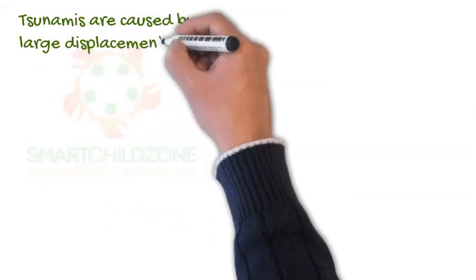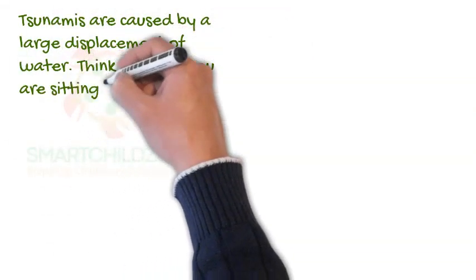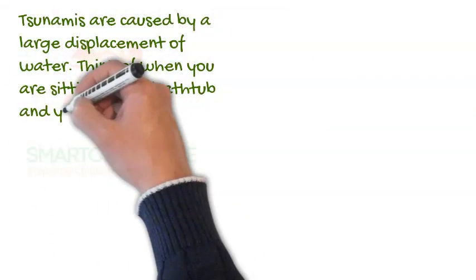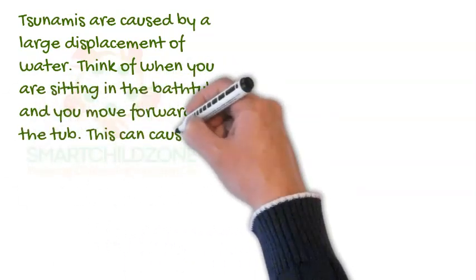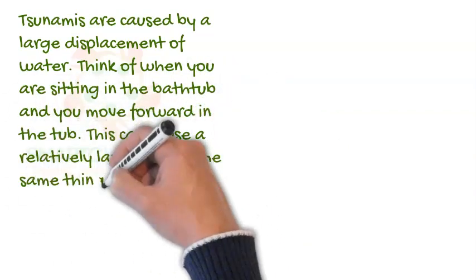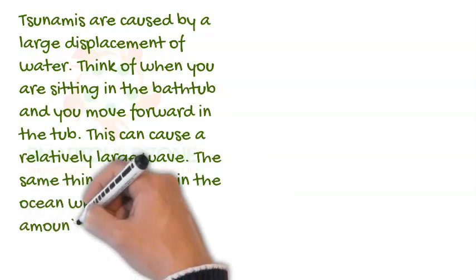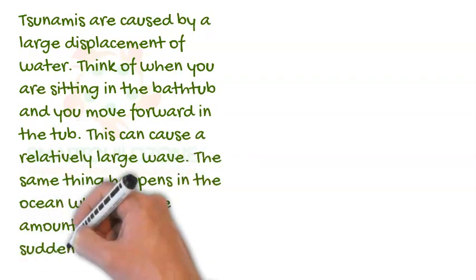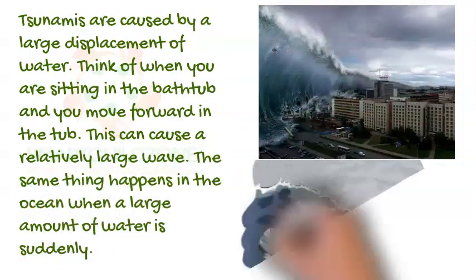Tsunamis are caused by a large displacement of water. Think of when you are sitting in the bathtub and you move forward in the tub — this can cause a relatively large wave. The same thing happens in the ocean when a large amount of water is suddenly displaced.